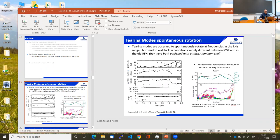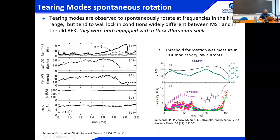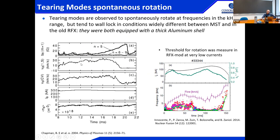Without control, tearing modes are observed to rotate spontaneously at frequencies in the kilohertz range, but they tend to wall-lock under conditions that varied widely between experiments. An example from MST shows the second trace as the magnetic phase velocity alongside the plasma velocity measured with spectroscopy Doppler shift — they track together. But when one mode grows and reaches single helicity, its amplitude increases and at a certain point the rotation frequency locks to zero, and the plasma is also arrested.